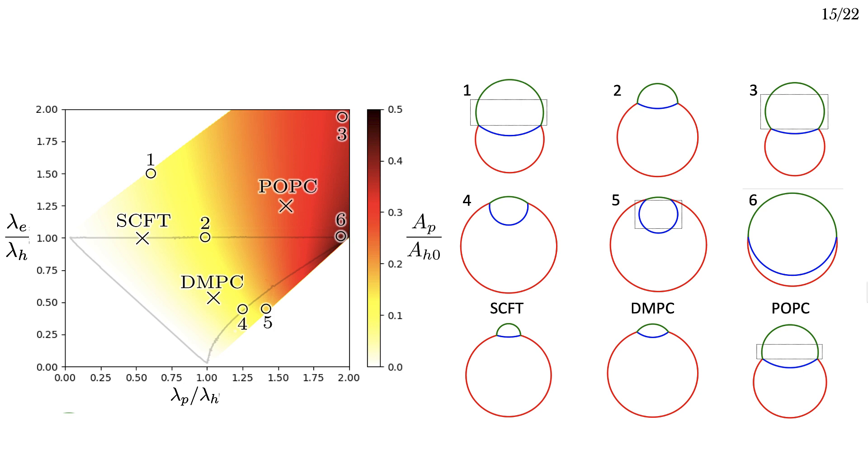For another thing, if a cell wants to open a pore and have it close again, the critical size controls how large it can be before wanting to close. This is assuming a reservoir.